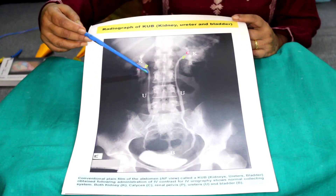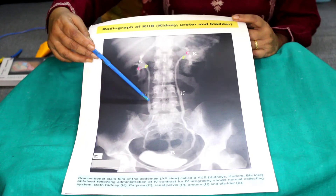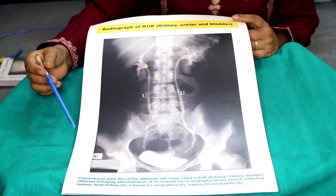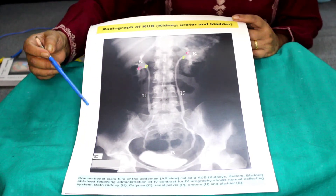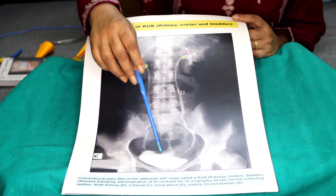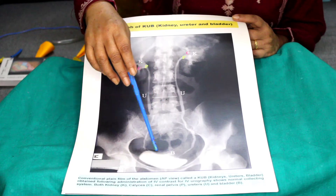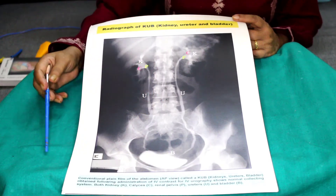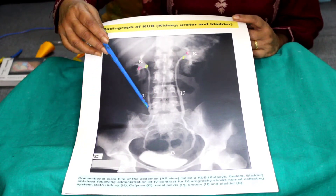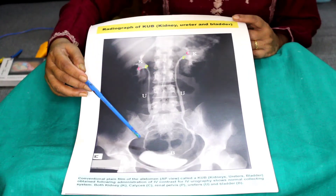This is the view of the ureter, which is 26 cm in length. You will see the urinary bladder fully absorbs the dye, and we can visualize the urinary bladder is also normal. The ureter is normal and the calyces are normal.